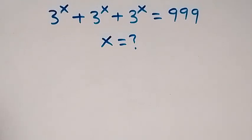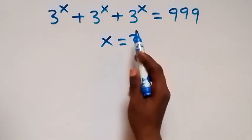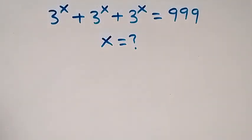Hello, you are welcome. How to solve this nice exponent equation from here. We have 3 raised to the power x plus 3 raised to the power x plus 3 raised to the power x equals to 999.